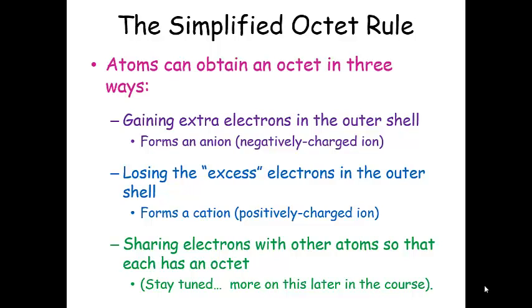So atoms can obtain an octet in 3 ways. They can gain extra electrons in the outer shell. And when they do this, they're going to form an anion or a negatively charged ion. Or they can lose excess valence electrons in that outer shell. And when they do that, they're going to form a cation, a positively charged ion.